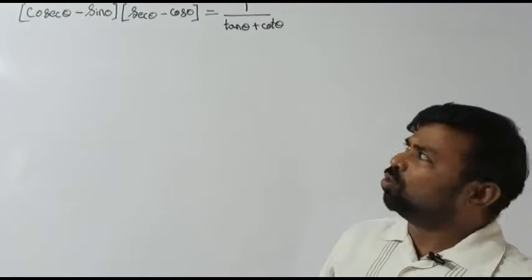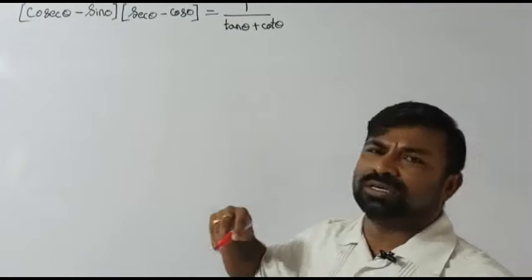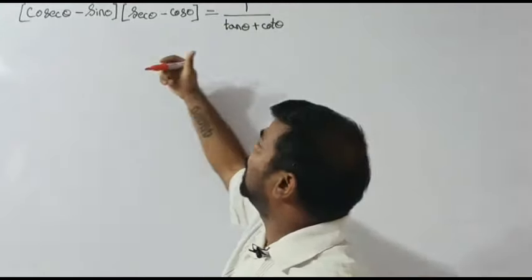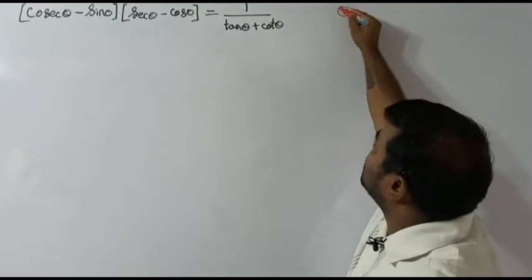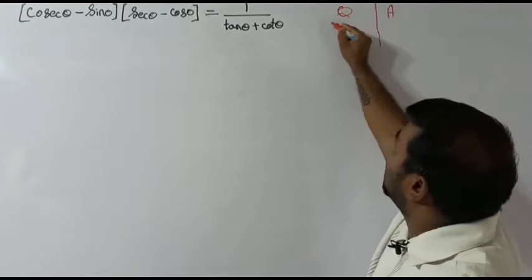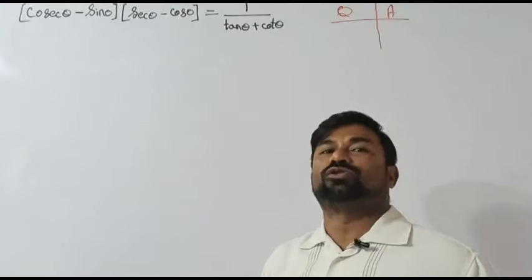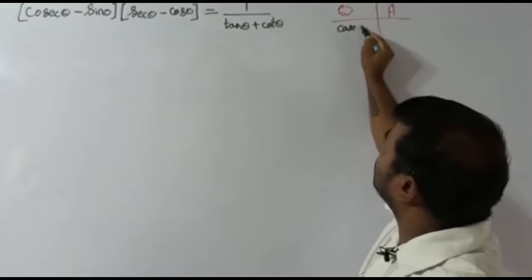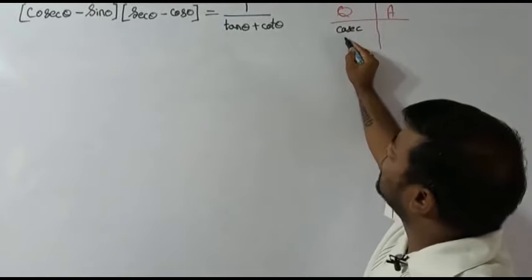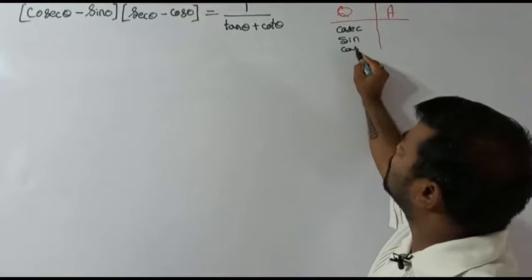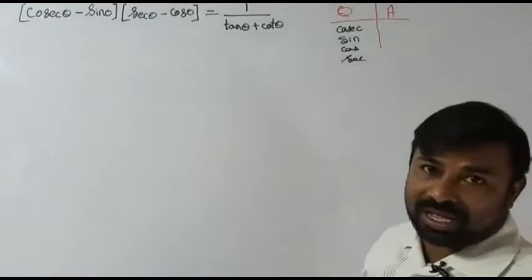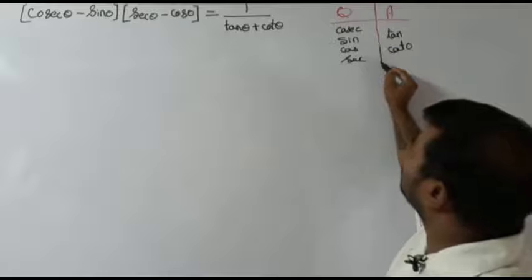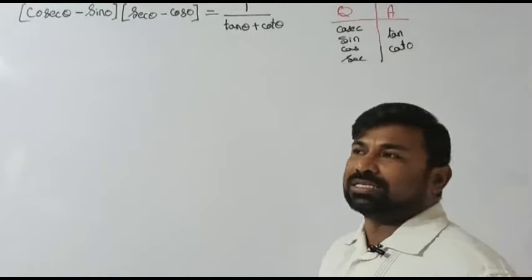While dealing with the question, let's see what's there in the question and where we have to reach. If you check it out, we are having cosecant in the question, sine in the question, cos and secant — and we are having tan and cot in the answer. So we need to understand what identities to follow to get there.